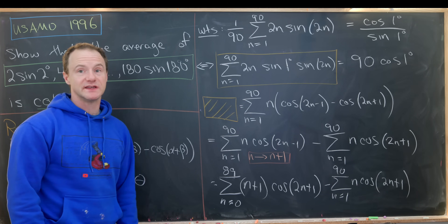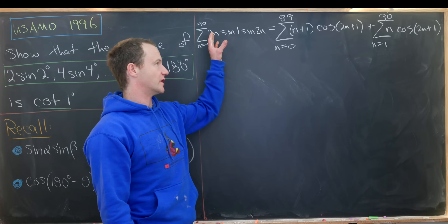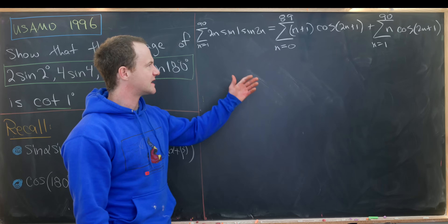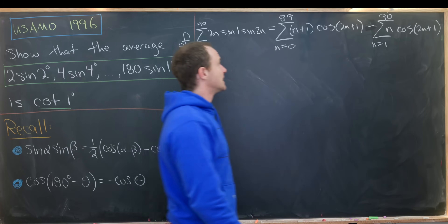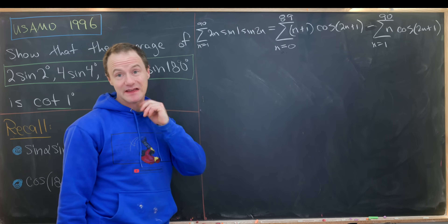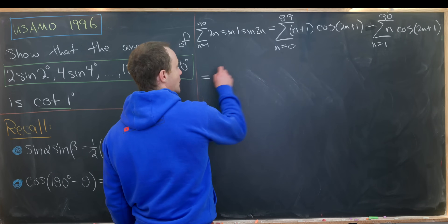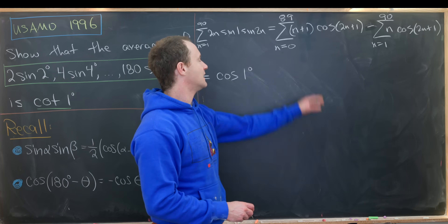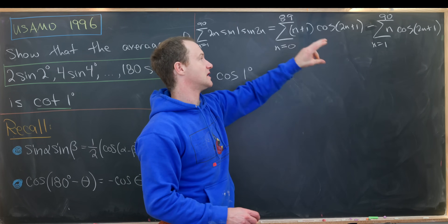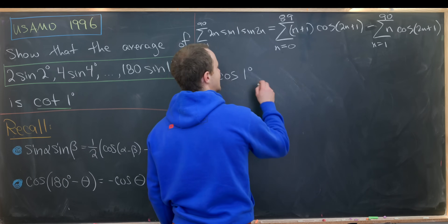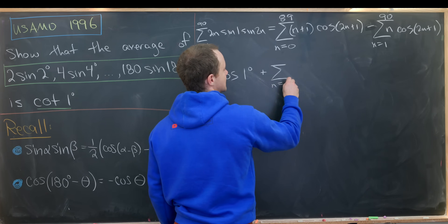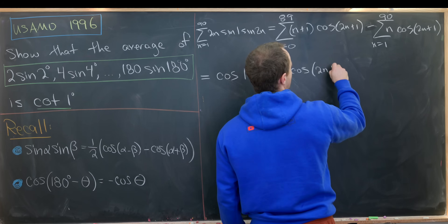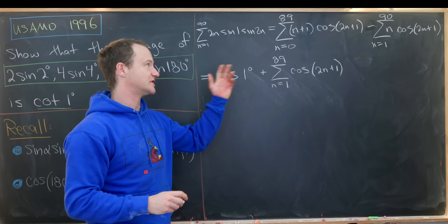Now, combining these two sums, notice most terms are similar except the zeroth term in the first sum and the 90th term in the second. Pulling out the zeroth term gives exactly cosine of one degree. Combining terms from n equals one to 89 yields n plus one minus n, leaving just the sum as n goes from one to 89 of cosine of two n plus one.